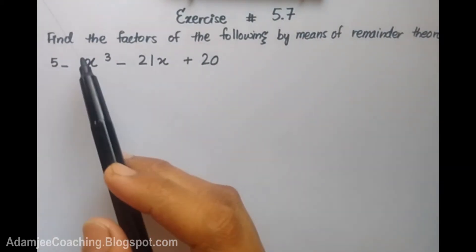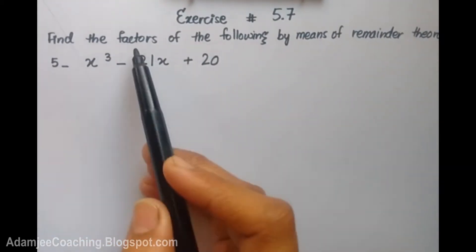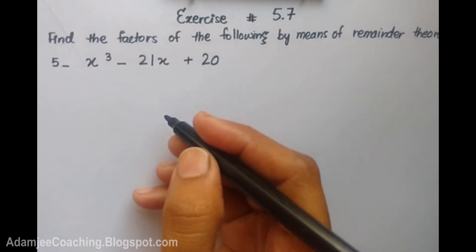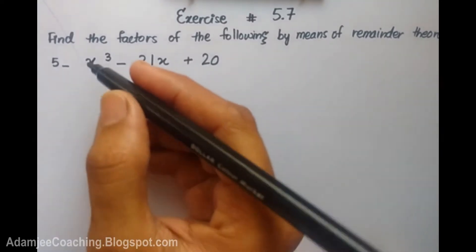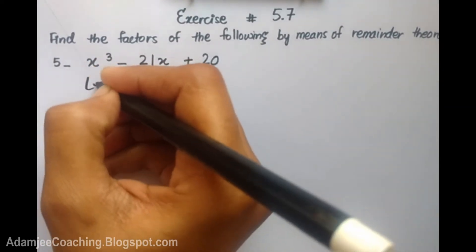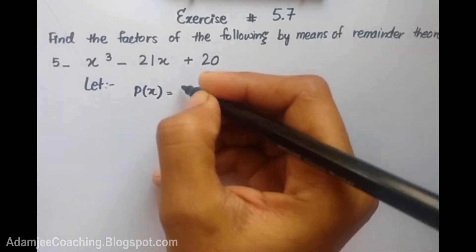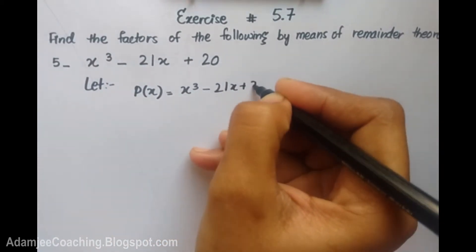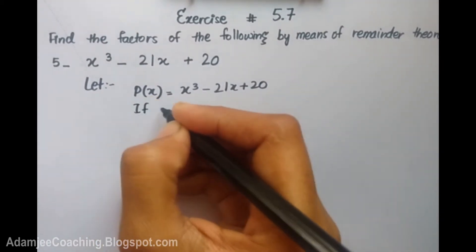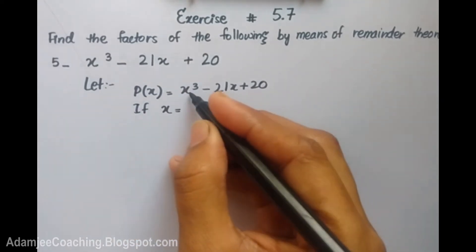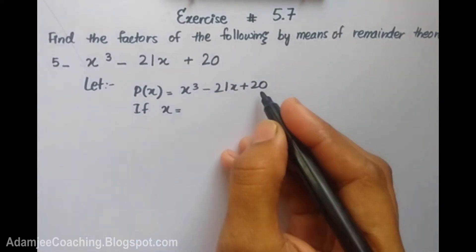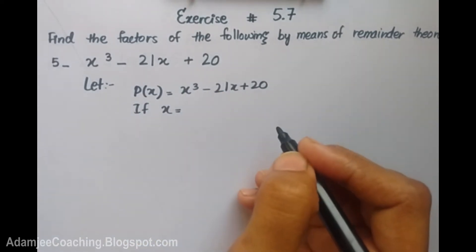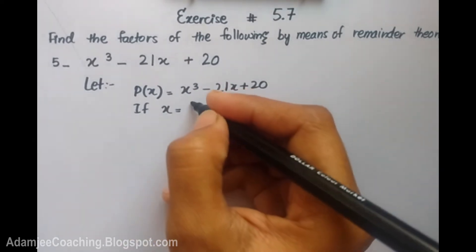As-salamu alaykum. I have a question about exercise 5.7: find the factors of the following by means of the Remainder Theorem. Let's start with part a: p(x) equals x cube minus 21x plus 20. What do I put in this expression? I put 1 positive and 20 positive, and 21 is minus 21. So I will put 0 if I put in the x value.